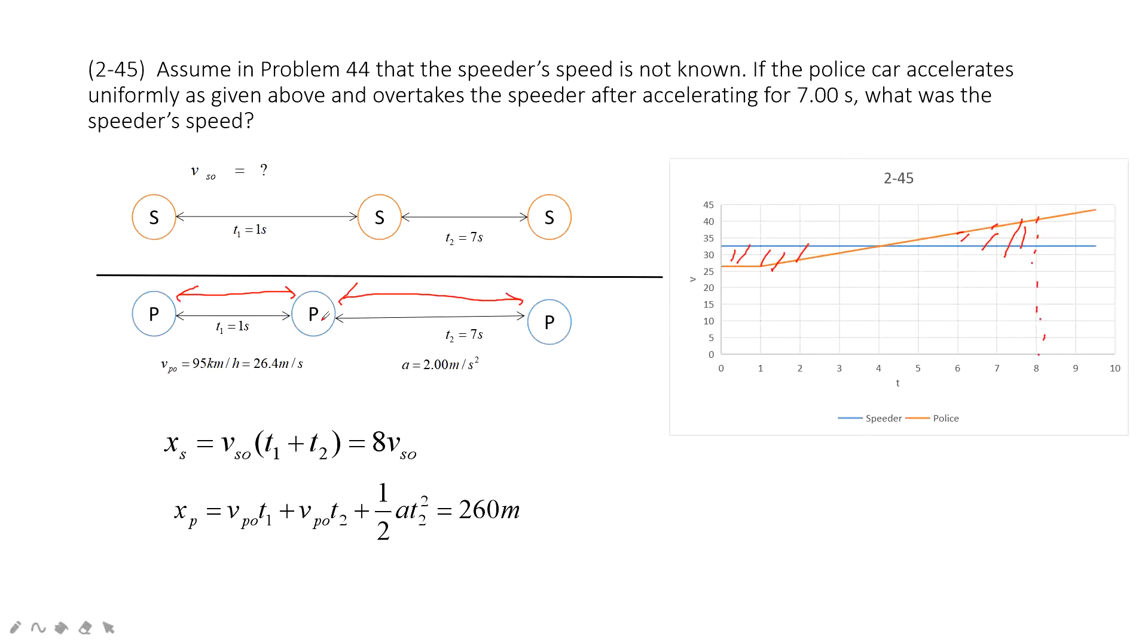So, this one, the start velocity is 26.4 m per second, times T2 plus 1 half A T square. And if we input all the known quantities, we find the xp displacement for the police is 216 m.